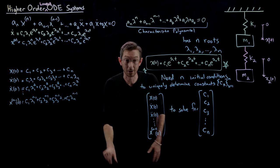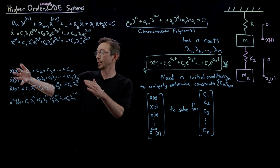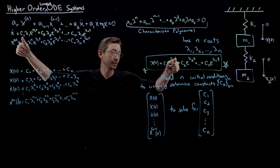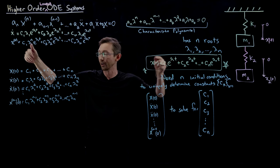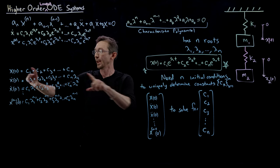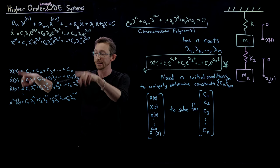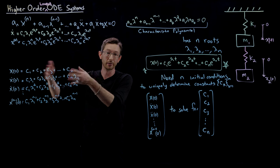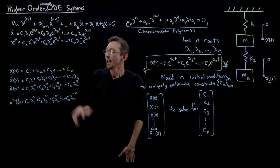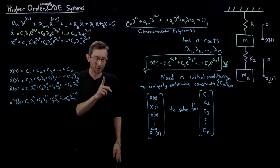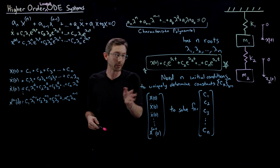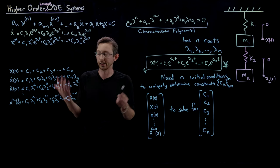And the (n−1)th derivative evaluated at zero is going to be c₁ λ₁ⁿ⁻¹ + c₂ λ₂ⁿ⁻¹ + c₃ λ₃ⁿ⁻¹ + ... + cₙ λₙⁿ⁻¹. All I did was take all the derivatives, plug in time equals zero, and all the e^(λt) terms went away — leaving this simple sum of coefficients and powers of λ.